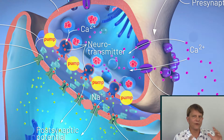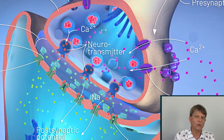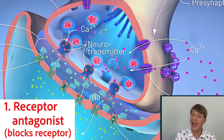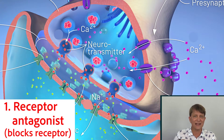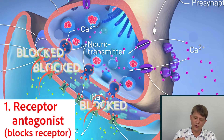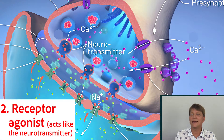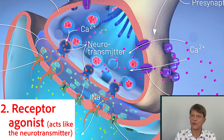Now let's take a look at the general mechanisms by which drugs act. The first is an antagonist — a drug that binds to the receptor on the second neuron and prevents the neurotransmitter from binding to that receptor. A second way is an agonist, which binds to that same receptor and causes the same physiological response as the natural neurotransmitter would.